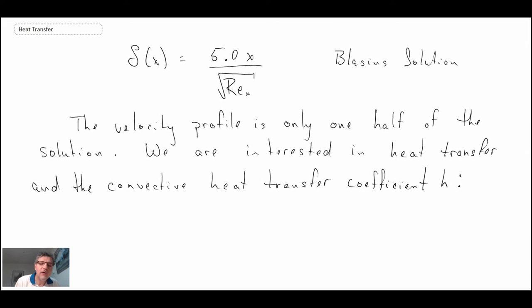Having the velocity profile, that's only taking us halfway. What we need to do is determine the convective heat transfer coefficient. How can we go about doing that? It turns out that you need to be able to get the temperature profile in the boundary layer in order to estimate the convective heat transfer coefficient. Let's take a look at how we may go about doing that.